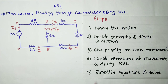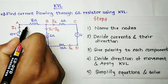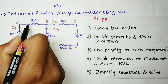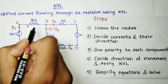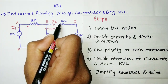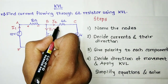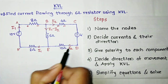Now give polarity to each component. The components here are the resistances. While giving the polarity, one should note that the current entering should be taken as positive. So current entering at this point is positive; at the other end it is negative. The current entering this 4-ohm resistance: here it is positive, and here it is negative.